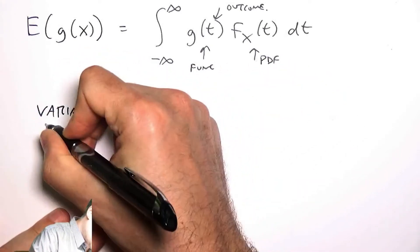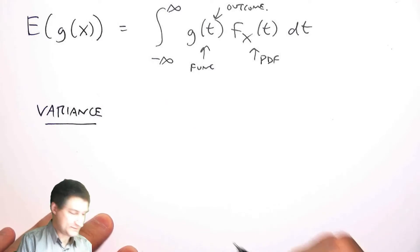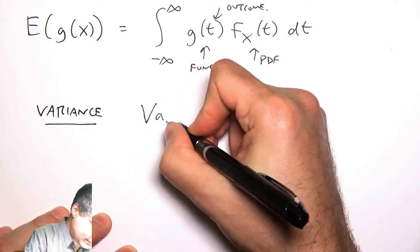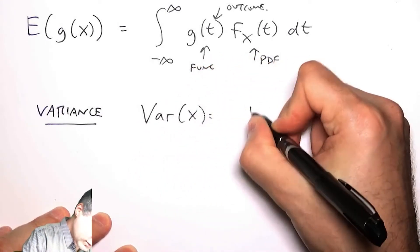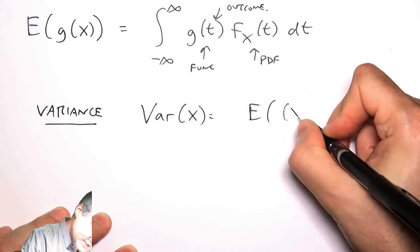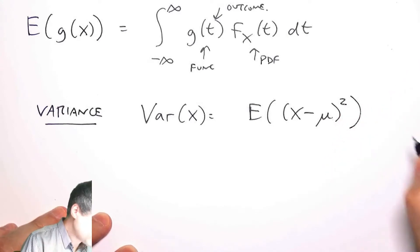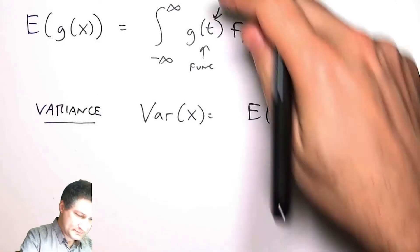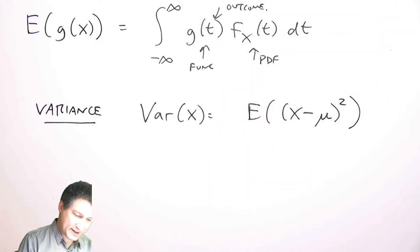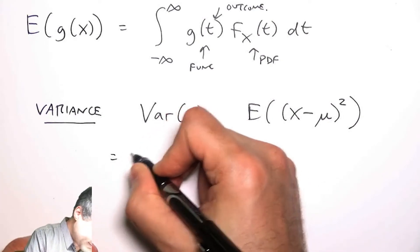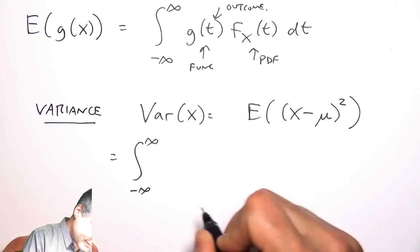The variance for a continuous random variable is, as before, the expected value of X minus the mean squared. So I can work out, just to be proper with integrals, what does that mean?